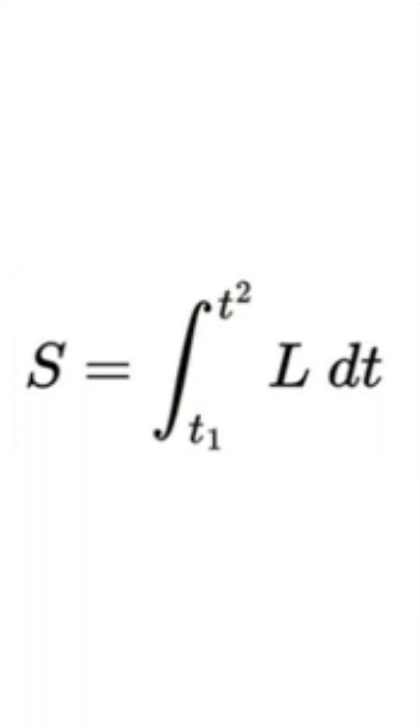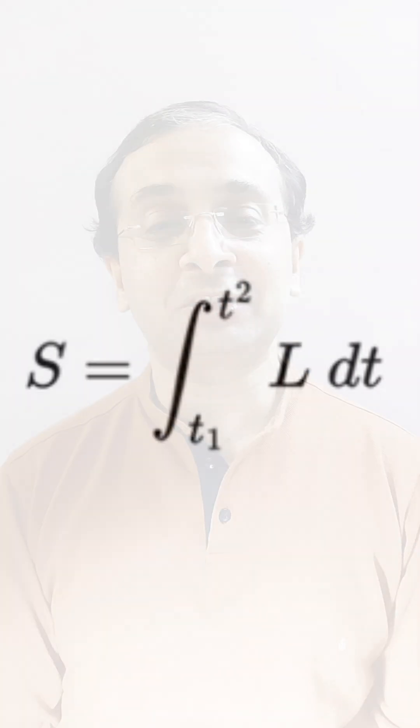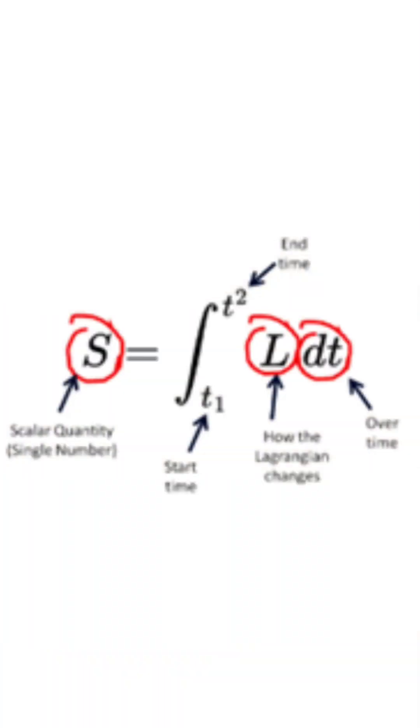The Lagrangian can be taken further into what is called the action principle S, which is a scalar quantity and a single quantity. It is an integral that calculates the path of a particle starting from T1 and moving up to T2, and then we get L, the Lagrangian, which varies over time.